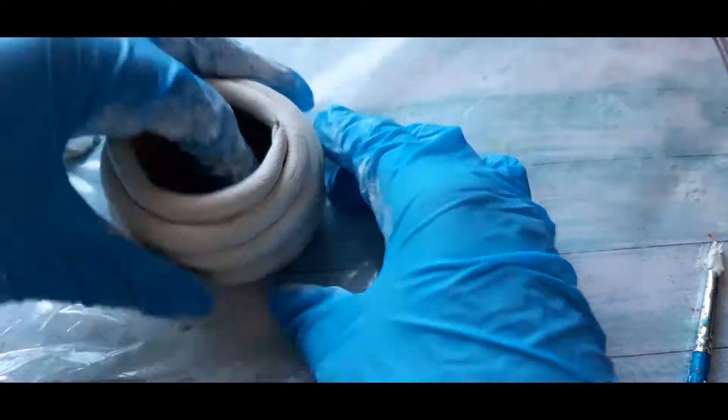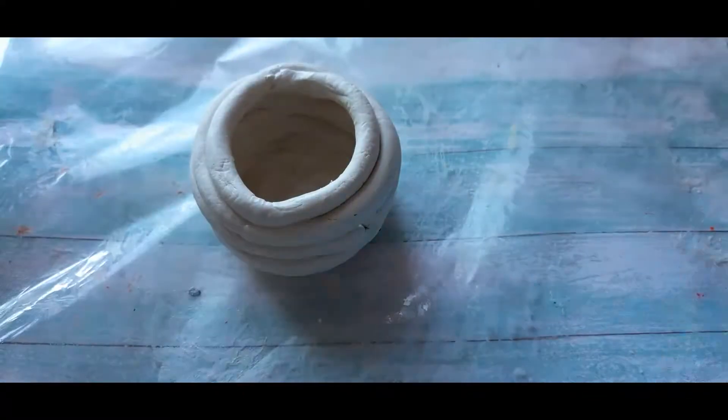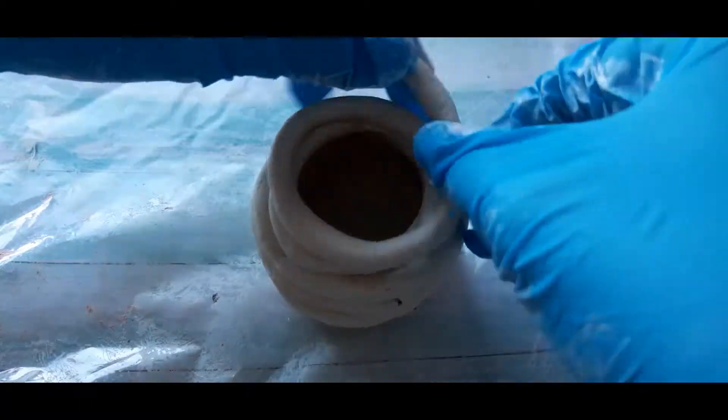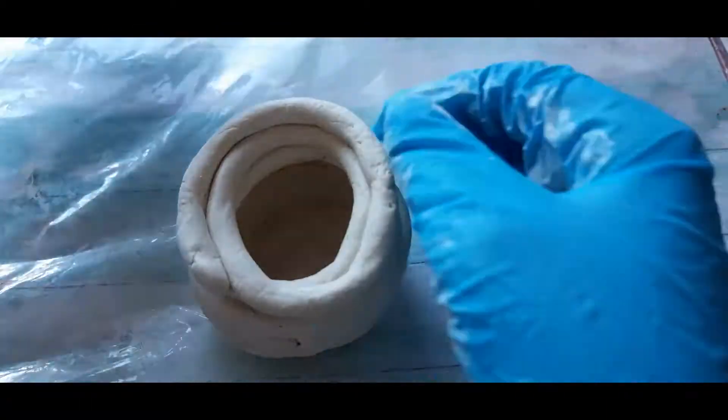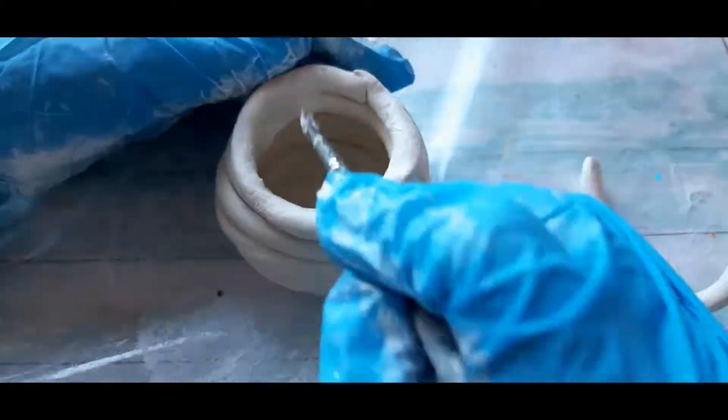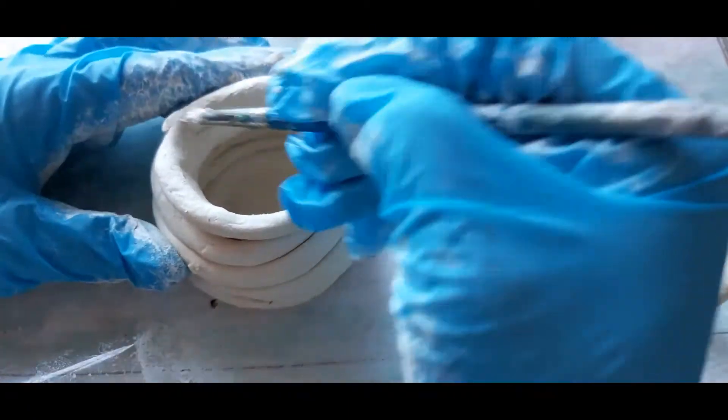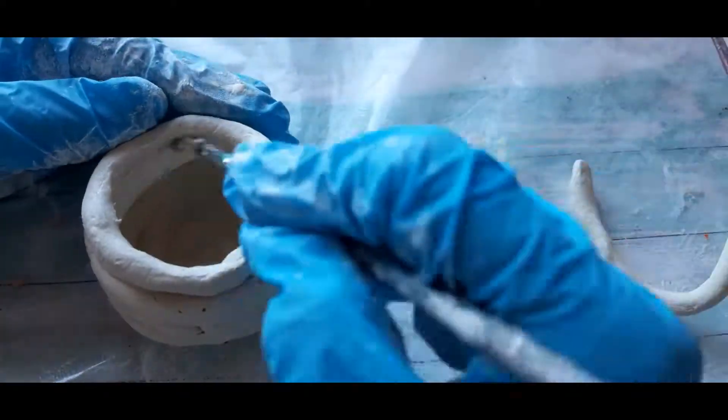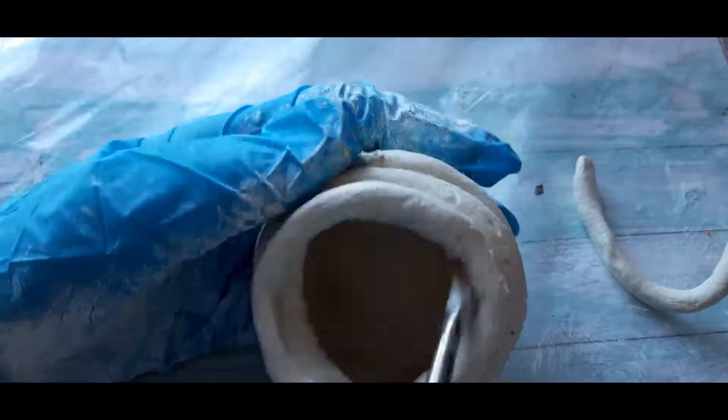I added more clay to form the upper part of the cauldron. Try to smooth the inner part of the cauldron because it's harder to reach the surface during sanding. Let it dry for a while.